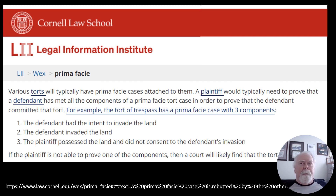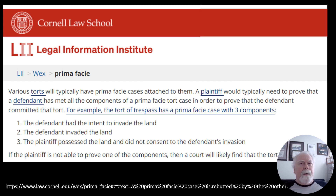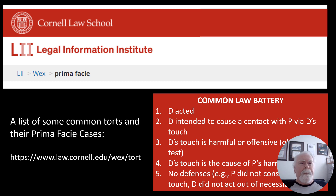The tort of trespass, for example, has three prima facie elements: the defendant had the intent to invade the land, the defendant did invade the land, and the plaintiff owned the land and did not consent to the invasion. When you say someone trespassed in court, you need admissible evidence proving these three things. If you do, you've created a rebuttable presumption of liability, and it's up to the defendant to rebut the evidence or present a defense — such as necessity due to an emergency.